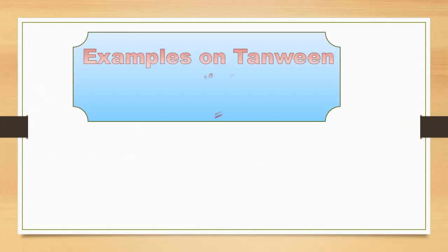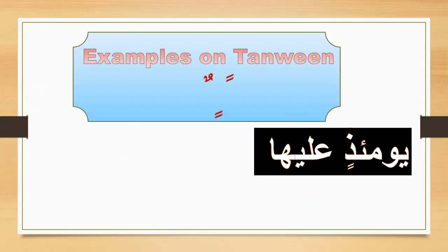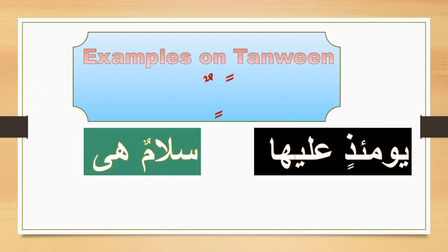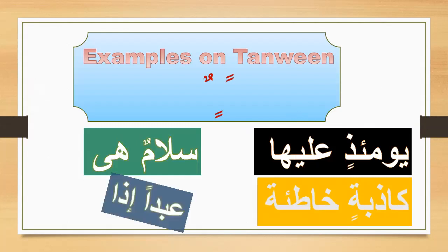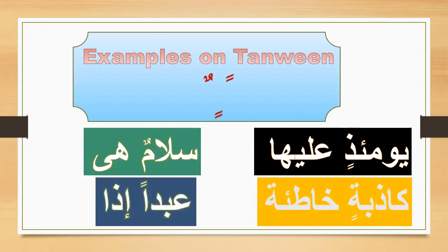Examples on Tanwin: fathatayn, dammatayn, kasratayn. 'Yawma izin alayha,' 'Salamun hiya,' 'Habibatin khati'ah,' 'A'abadan idha.'